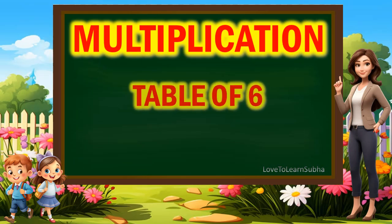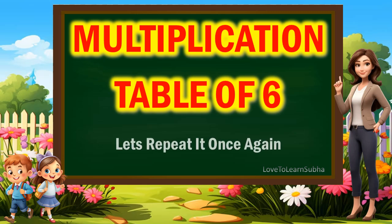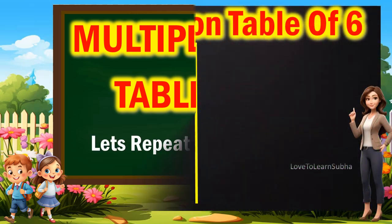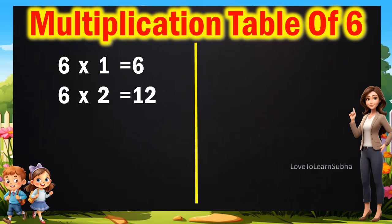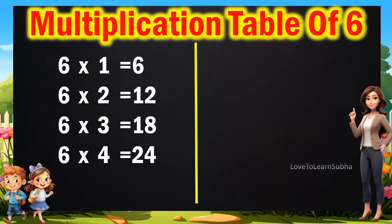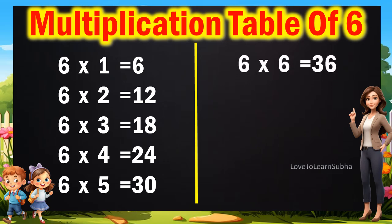Now, let's repeat it once again. 6 ones are 6. 6 twos are 12. 6 threes are 18. 6 fours are 24. 6 fives are 30. 6 six are 36.